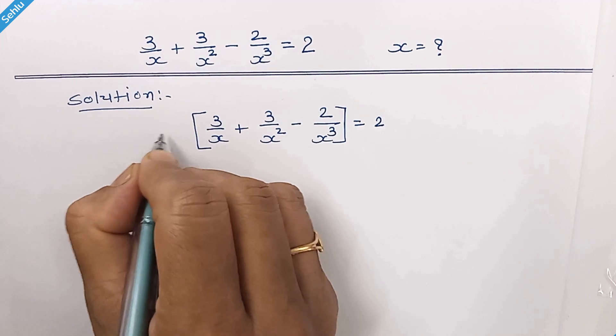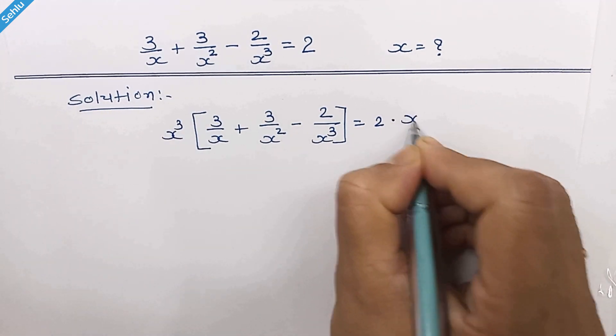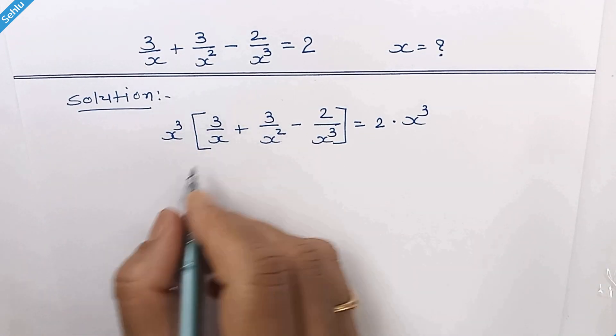In the first step, we will multiply with x cube both the sides. Plug in this x cube into this bracket.